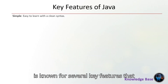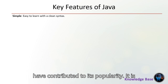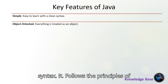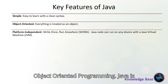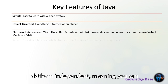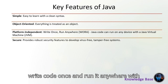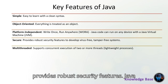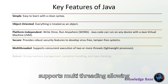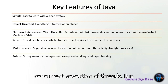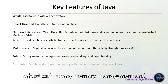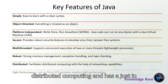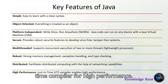Java is known for several key features that have contributed to its popularity. It is simple and easy to learn with a clean syntax. It follows the principles of object-oriented programming. Java is platform-independent, meaning you can write code once and run it anywhere with a Java Virtual Machine. It is secure, robust, supports multi-threading for concurrent execution, and also facilitates distributed computing, with a just-in-time compiler for high performance.